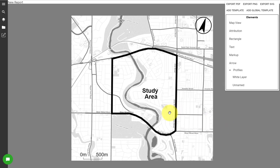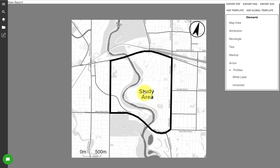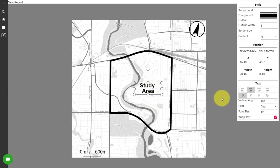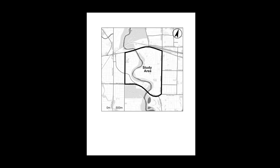You can zoom out and pan on the actual page. To pan you hold down your center scroll wheel and just move your mouse back and forth. Once that's done I'm clicking export PNG and I have an image file. This is the final product — I've dragged it into Word.